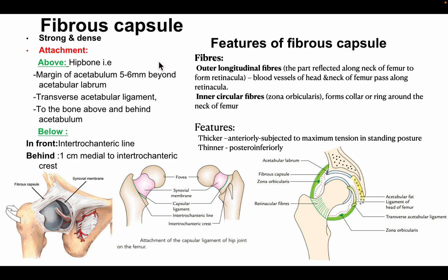The fibrous capsule is strong and dense. Above, it is attached to the hip bone near the margin of the acetabulum, five to six mm beyond the acetabular labrum; also to the transverse acetabular ligament near the acetabular notch, and to the bone above and behind the acetabulum. Below, anteriorly it is attached to the intertrochanteric line, and posteriorly it is attached one centimeter medial to the intertrochanteric crest.